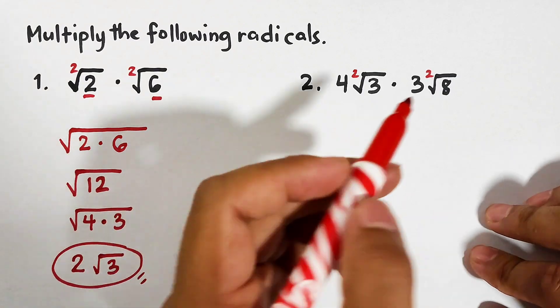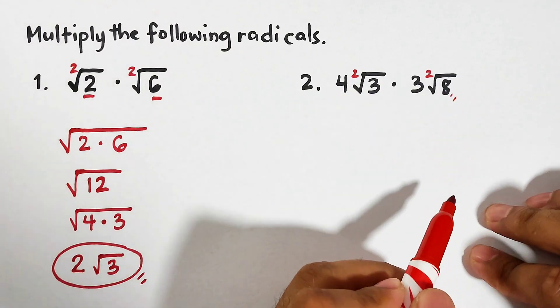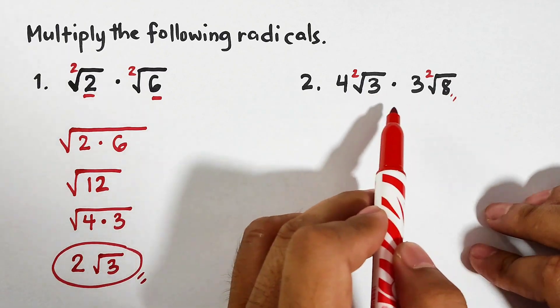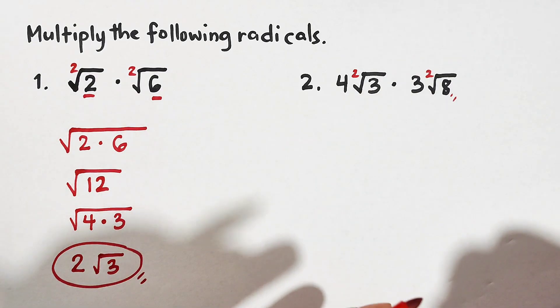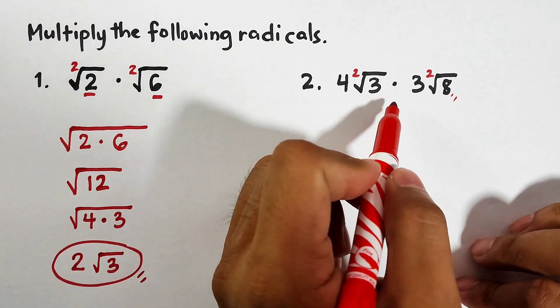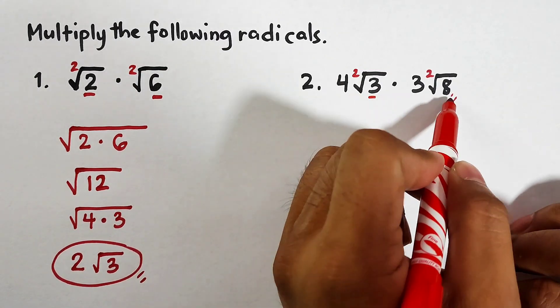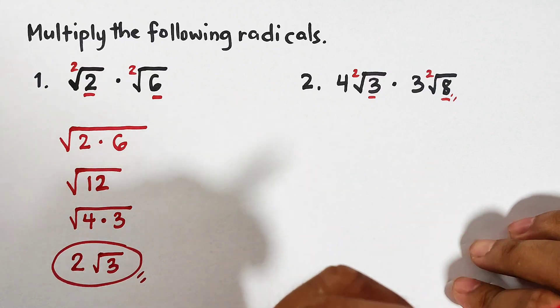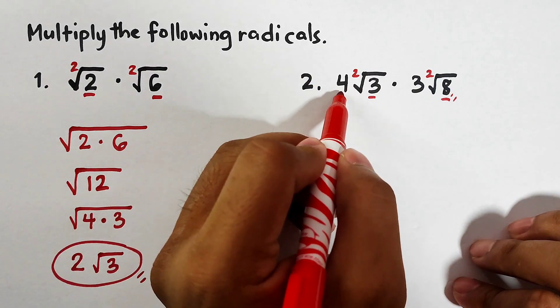And now actually there are two possible ways on how to do this. The first way is we can simplify first the square root of 8. The second way is we can directly multiply it and then eventually we will simplify it. But in this case, since the numbers are small numbers, we can directly multiply the numbers inside.